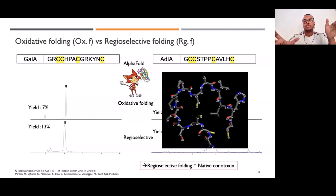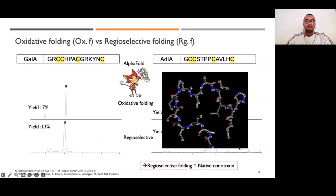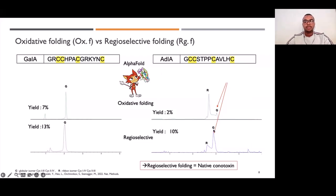But for native alpha-conotoxins, we know that the right connectivity for alpha-conotoxins is between cysteines 1 and 3, and cysteines 2 and 4. I did the same thing with G1A, and it seemed to get the right result that cysteines 1 and 3 have the disulfide bond, and cysteines 2 and 4 have the disulfide bond here. So we see that with alpha-conotoxins, sometimes it can lead to the ribbon isomer in oxidative folding, but with regioselective approach, we get the globular isomer, which is the native conotoxin.